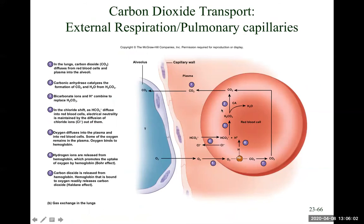With oxygen, there's only one way to carry it — attached to red blood cells. 99% of the time, that's how we carry oxygen. There is about 1% of the time where it's oxygen as a gas, but that's very, very rare. Most of the time, oxygen is carried trapped in the red blood cells.